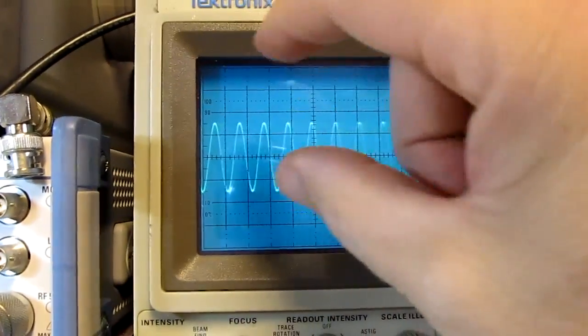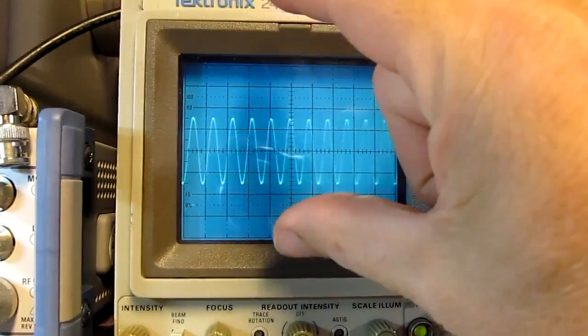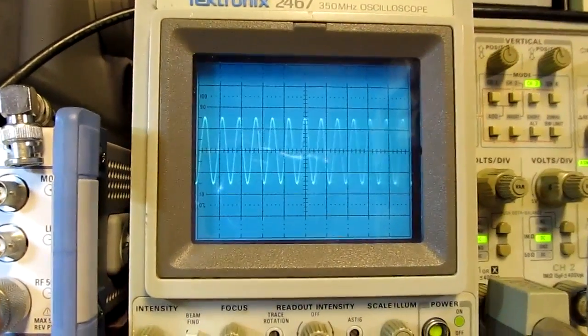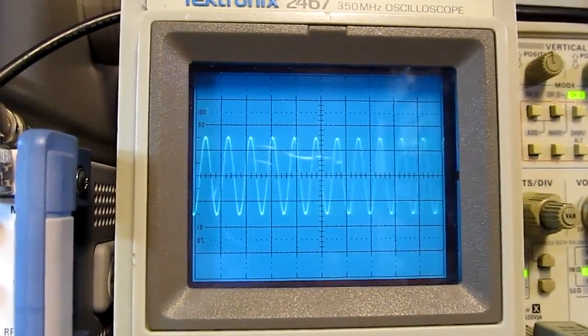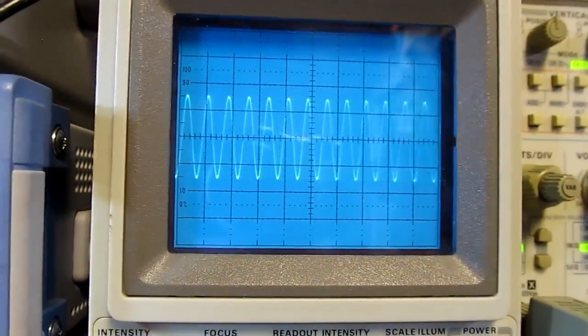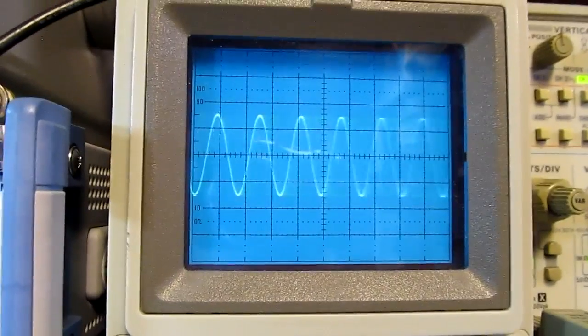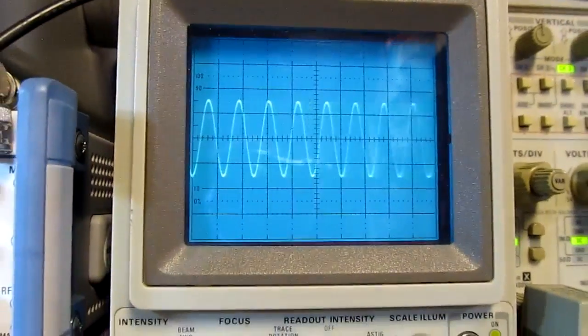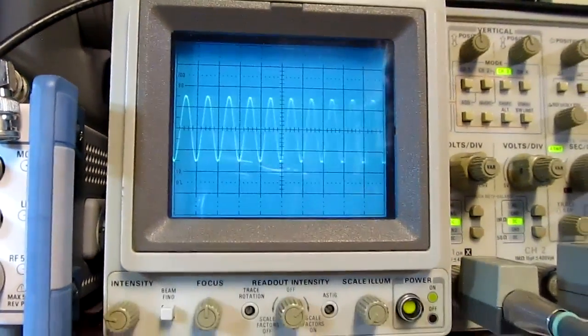And by putting that, say, on the scope screen here, you'd be able to kind of see the signal grow or shrink depending on how that circuit is responding to that sweeping frequency. And that's typically how you'd use a sweep oscillator for doing things like receiver alignment or testing a filter or something like that.